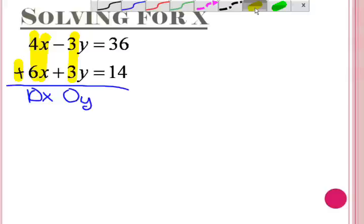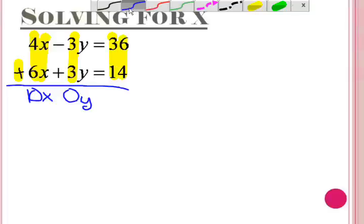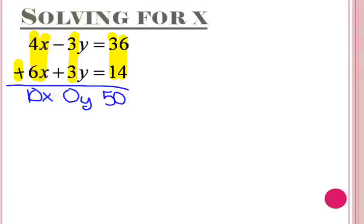Lastly, we add 36 plus 14 to get 50. Now we have 4x minus 3y equals 36 plus 6x plus 3y equals 14, which simplifies to 10x equals 50.